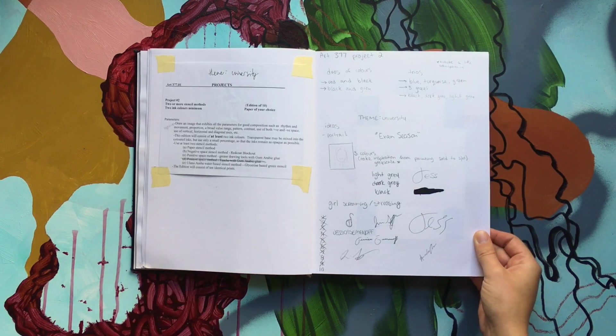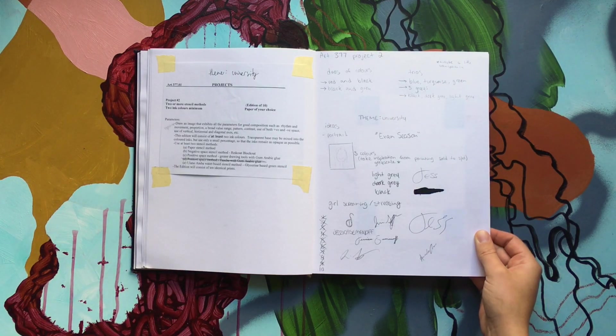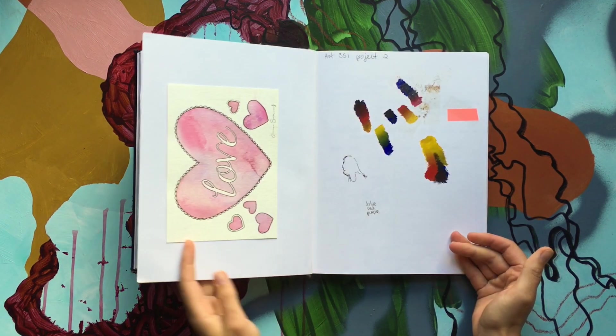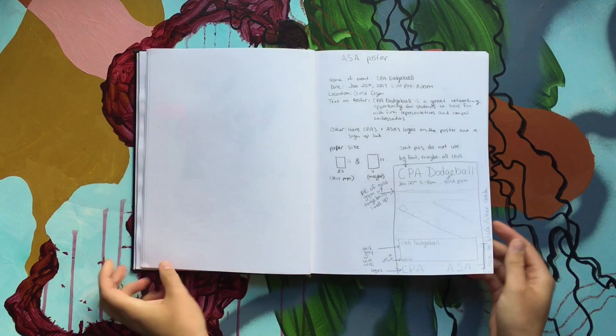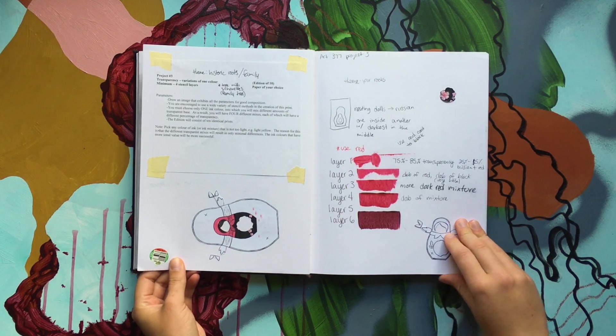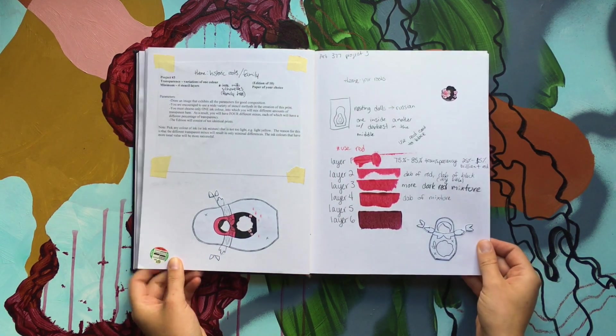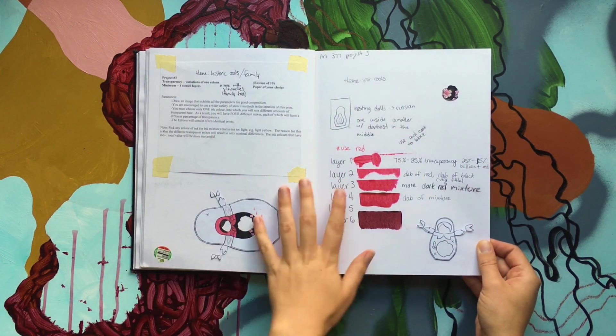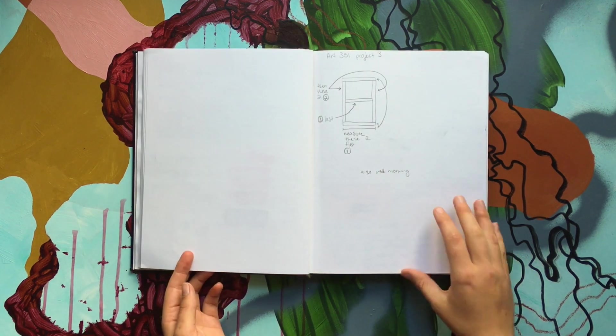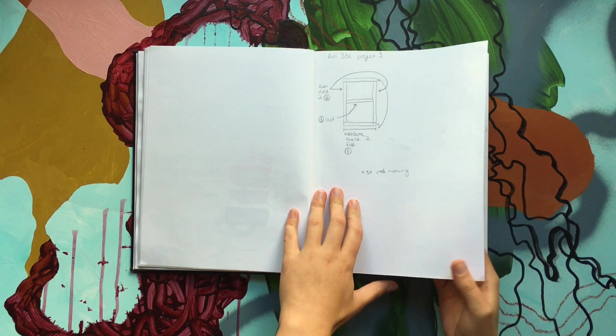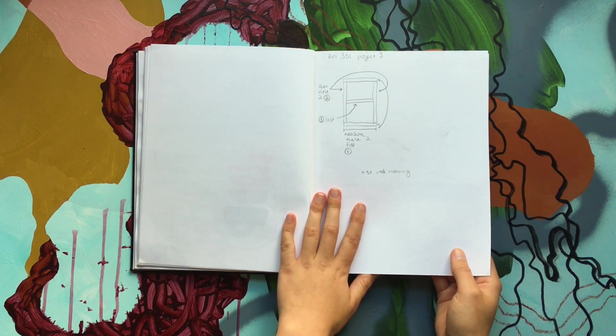This was our second screen print project. Another poster idea. I did some Russian nesting dolls for this screen project. How to build a back of your canvas.